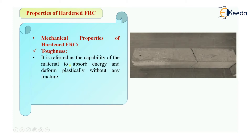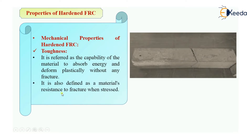The next mechanical property is toughness. Toughness is the capability of a material or concrete to absorb energy and deform plastically without fracture. If my concrete deforms due to external loading without fracturing, it has toughness. It is also defined as the material's resistance to fracture when stressed — when external load is applied, the member stretches and there are chances of fracture; resistance against that fracture is toughness.